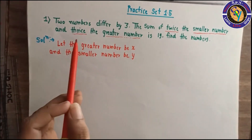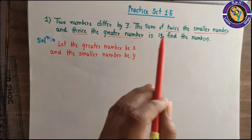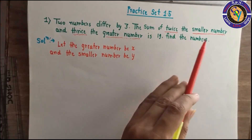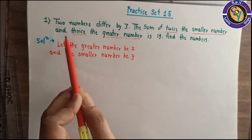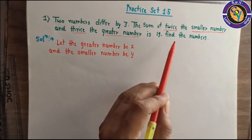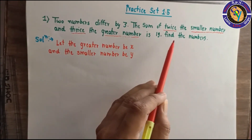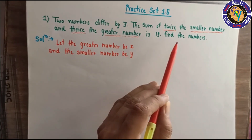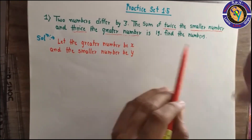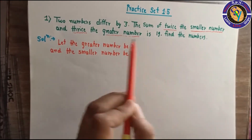The first question: Two numbers differ by 3. The sum of twice the smaller number and thrice the greater number is 19. Find the numbers. So we need to find the smaller number and the greater number.